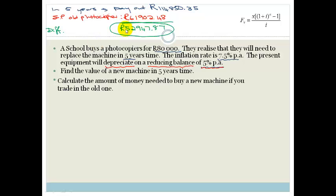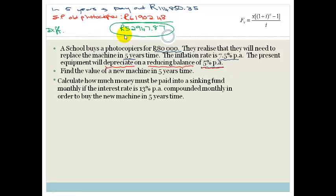The question now is, calculate how much money must be paid into a sinking fund monthly if the interest rate is 13% per annum compounded monthly in order to buy the new machine in five years' time. So, now we're going to be using this formula. Our future value, the amount of money we need to raise, is 52,947.87.